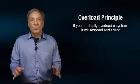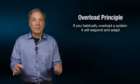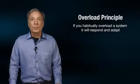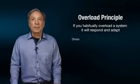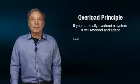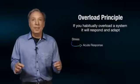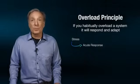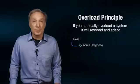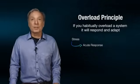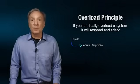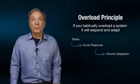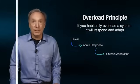As stated, if you habitually overload a system, it will respond and adapt. Basically, when you engage in physical activity, the stress imposed by a single bout of exercise elicits an immediate or acute response by the body, as already discussed with homeostatic disruption. However, if you exercise three to five times a week for several months, the body will make long-term or chronic adaptations to the repeated stress of regular exercise.